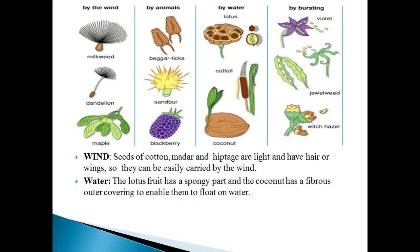By wind: Seeds of cotton, madder, and heptage are light and have hair on their wings, so they can be easily carried by the wind. By water: The lotus fruit has a spongy part, and the coconut has a fibrous outer covering to enable them to float on water.